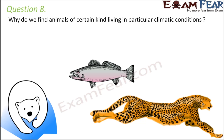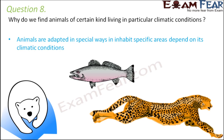Question number eight: why do we find animals of certain kinds living in particular climatic conditions? Why is the polar bear seen only in polar regions? Why are tigers seen only in forests and not in polar regions? That's because animals are adapted in special ways to inhabit specific areas depending on climatic conditions. For example, polar bears have thick fur, a layer of fat under their skin, and wide paws — all helping them walk over snow and stay warm.